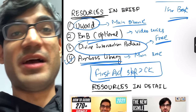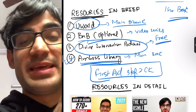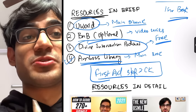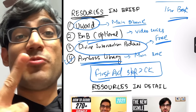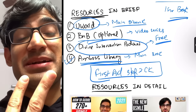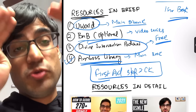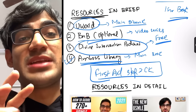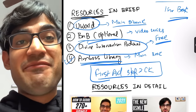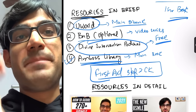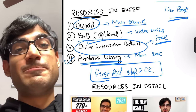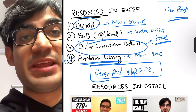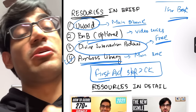The Amboss Library is the main resource used for Step 2 CK prep. It's fully updated according to current guidelines, has a high-yield button that filters only the most important material per topic, and lets you search specific conditions. You can try it out for free with a trial. It is highly recommended over other traditional textbooks for Step 2 CK preparation.